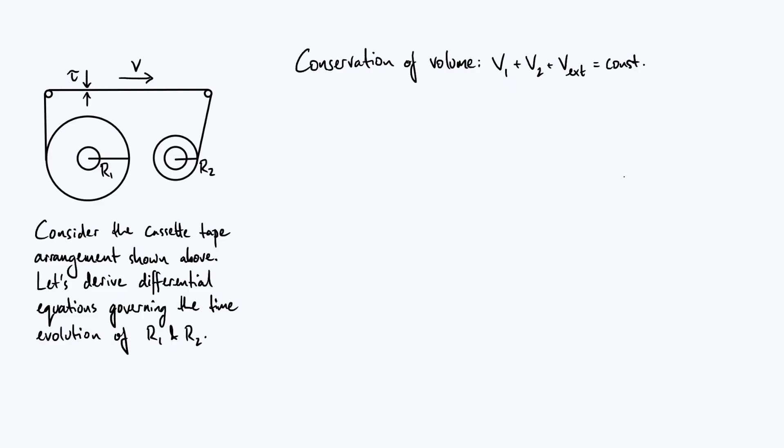And I've expressed that mathematically in this form here: v1 plus v2 plus what I've called vx is a constant. So v1 and v2 are the volumes of tape which are, at any particular instant in time, sitting on spool 1 on the left and sitting on spool 2 on the right, respectively.